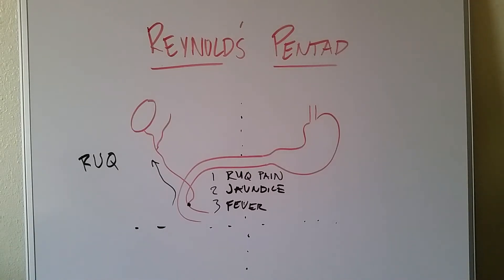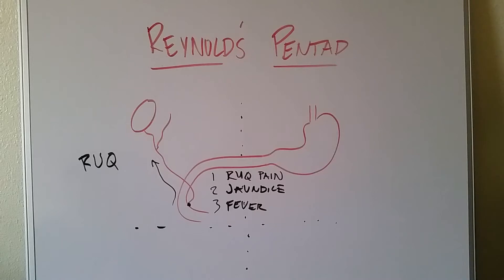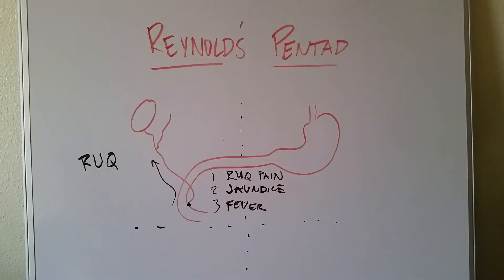We're going to continue with Reynolds Pentad. You might recognize what's up on the board right now as being from Charcot's triad. I didn't want to go back through it all, so I just left it up there. The gist of Reynolds Pentad is that Reynolds wanted to put his name on something and thought that Charcot's triad didn't fully describe the clinical process of ascending cholangitis, so he decided to add on two more terms. But in brief review: